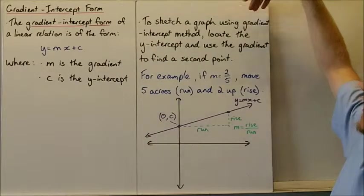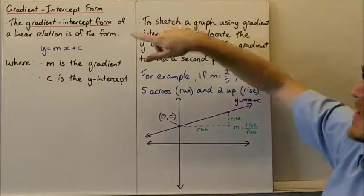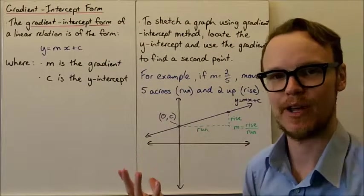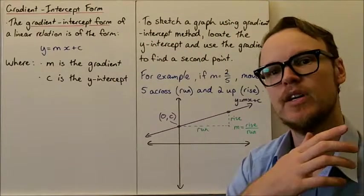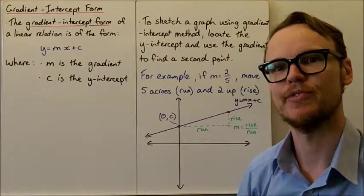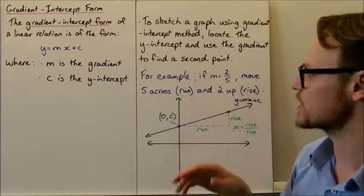To sketch a graph using gradient intercept method, we locate the y-intercept as our first point, then use the gradient to find a second point, draw a straight line through those two points, and we've graphed our linear relation.